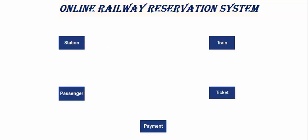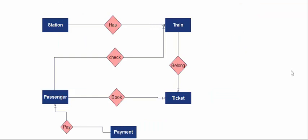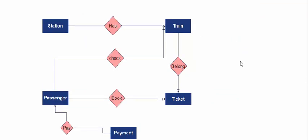Now let's come to the relationships of these entities. The passenger comes and checks for a train online, finds the train, then the passenger books a ticket, and then the passenger pays money to the system. Also, the station has a relationship with the train because a train belongs to a station.